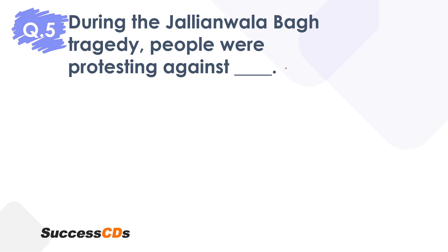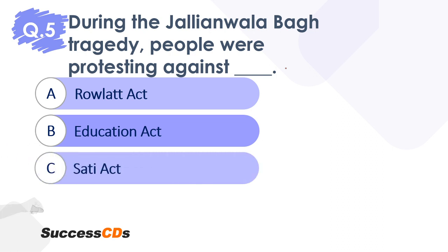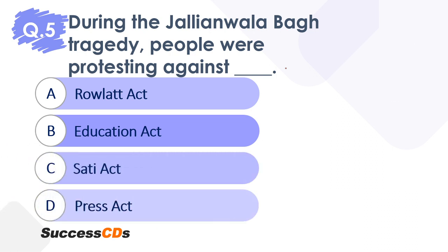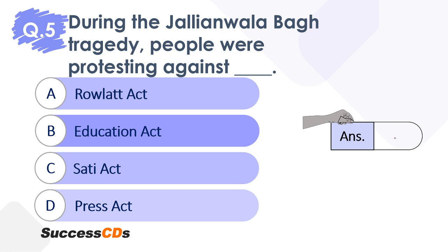Moving to question 5. During the Jallianwala Bagh tragedy, people were protesting against dash. Was it the Rowlatt Act, the Education Act, the Sati Act, or the Press Act? Time begins now. Please mention your answers in the format — for example, 1A, 2B — so it looks neat and tidy and is easier for us to track. Coming back to the question: during the Jallianwala Bagh tragedy, people were actually protesting against the Rowlatt Act.